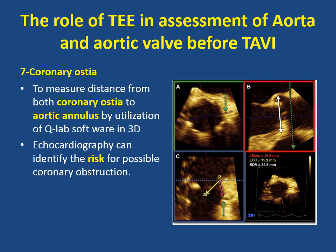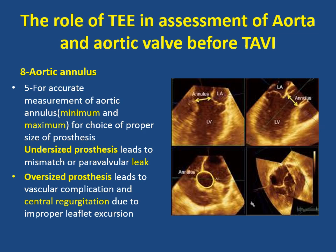It is also important to assess the coronary ostia using TEE to measure the distance from each coronary ostium to the aortic annulus by utilization of Q-lab software in 3D echo. Echo can identify the risk for coronary obstruction by the valve. It is also very important to assess the aortic annulus for accurate measurement of minimum and maximum dimensions for choice of proper prosthesis size. Undersized prostheses result in mismatch or paravalvular leak, while oversized prostheses lead to central regurgitation due to improper leaflet excursion.